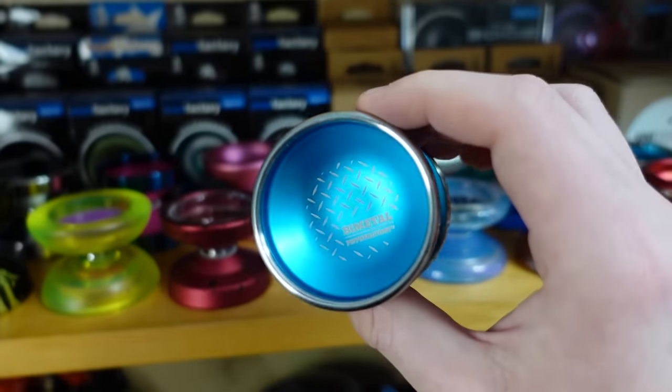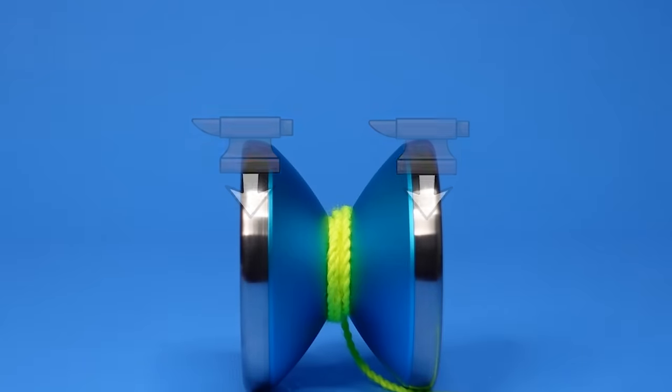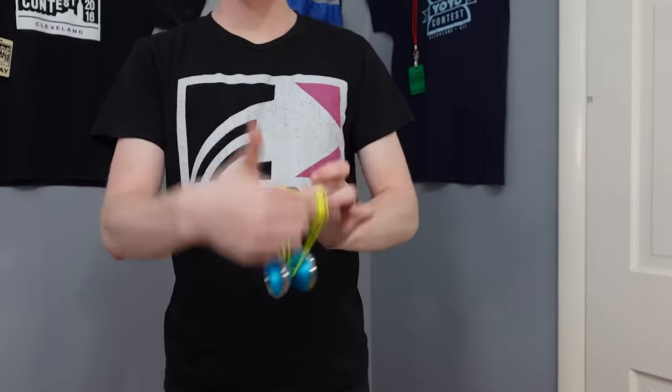You see, the yo-yos that spin the longest are bi-metal yo-yos. They have a steel ring to add weight to the outer edge of the yo-yo. This keeps the yo-yo stable, but most importantly, it helps it spin longer.